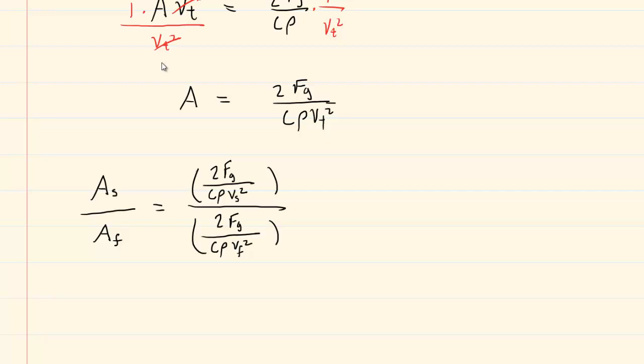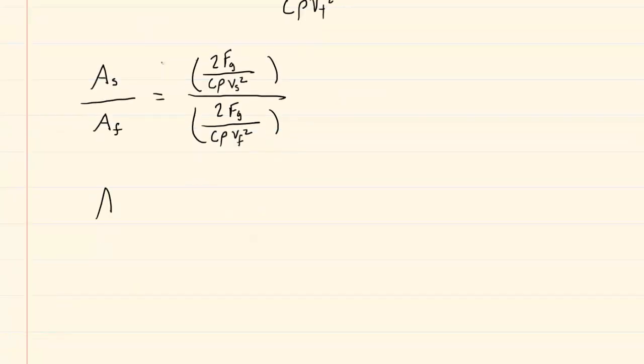Now we just have to clean up the right-hand side of this ratio. You'll notice it's a division of two fractions. So when you divide fractions, you can do a thing called keep change flip. That means you can keep the first fraction the same, change this division to a multiplication, and then flip the other fraction upside down. So c rho terminal speed squared divided by 2fg.